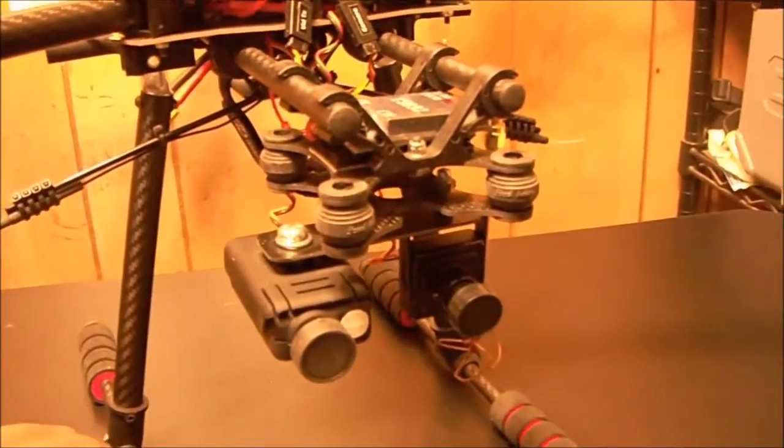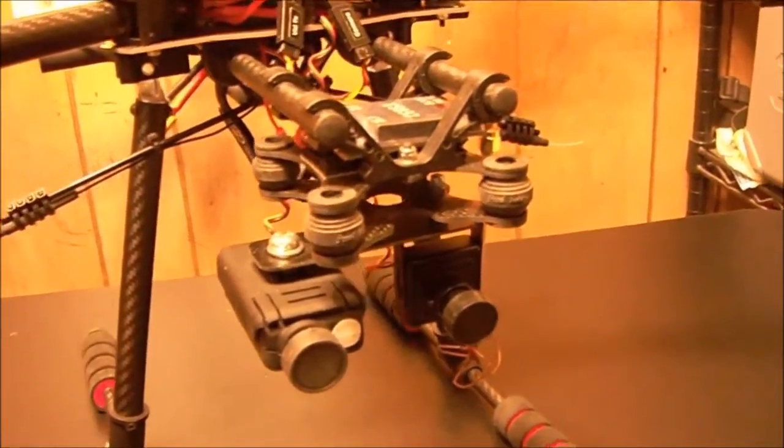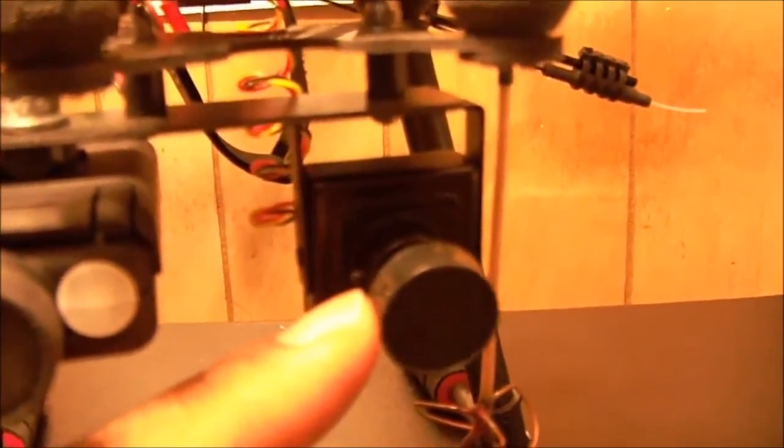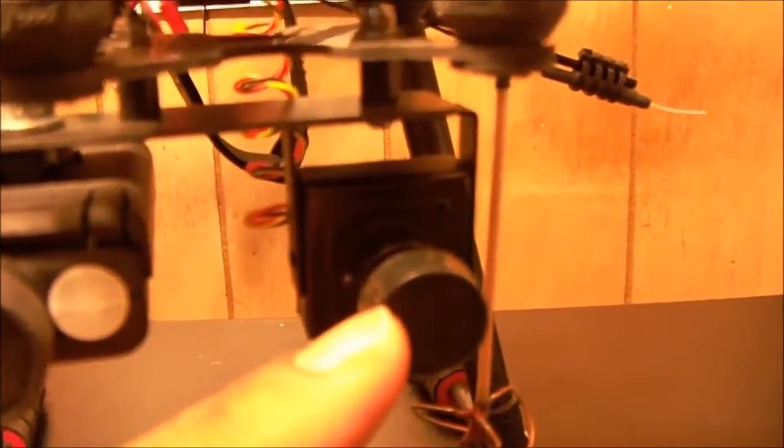The FPV equipment that I'm using over here is, let's start with the camera. The camera is a 700 TVL Turnigy camera. And I upgraded with a 2.1 millimeter lens, which allows me to see 150 degrees.